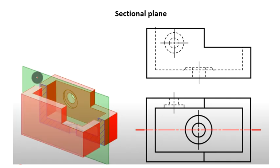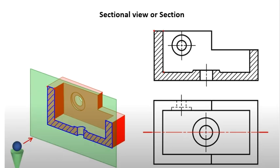The next topic is the sectional view. First, we need to understand what a sectional plane is. If there is any internal feature not visible from the outside in the front view or side view, we need to cut the object or machine component by an imaginary plane called a sectional plane. The purpose of this sectional plane is to make the internal features visible.